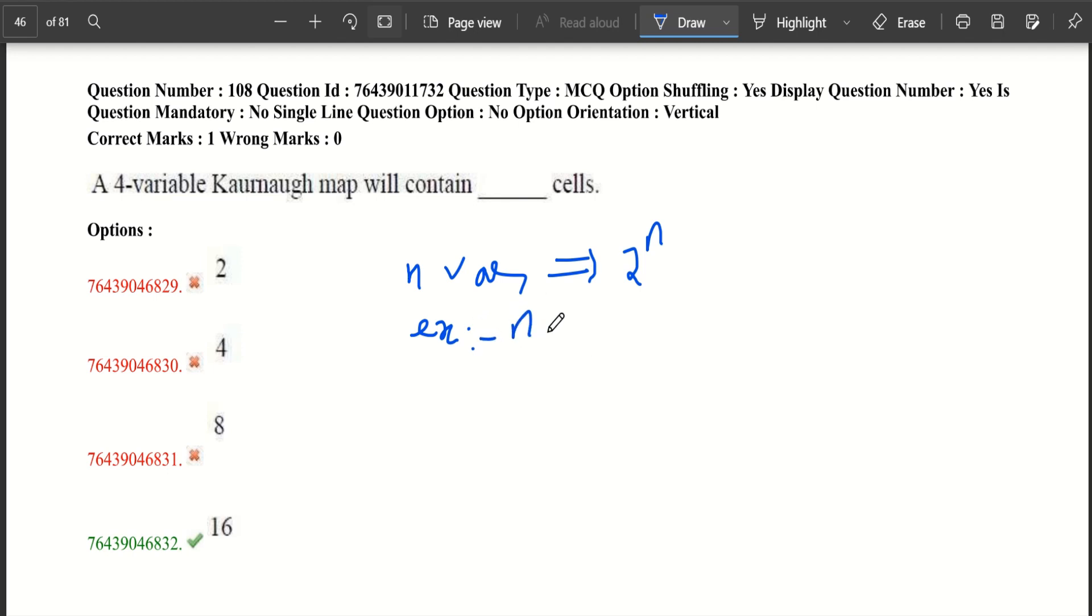It's like an example. If we have n equals to 2, it means we have two variables. Then the answer is 2 power 2, which means 4. Let's take n equals to 3. 2 power 3, it is 8.